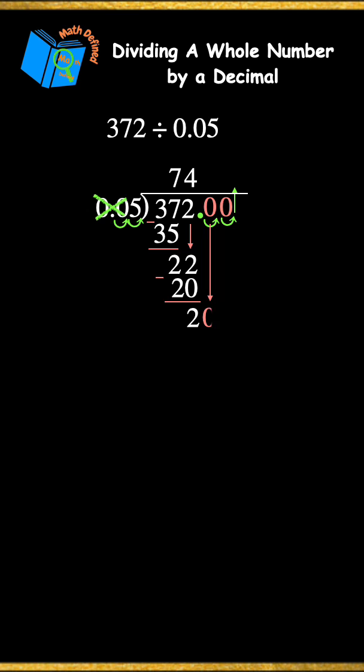And I'll bring down the next digit of 0 to get the number 20. 5 divides evenly into 20 4 times, and I still need to bring down that last digit of 0.